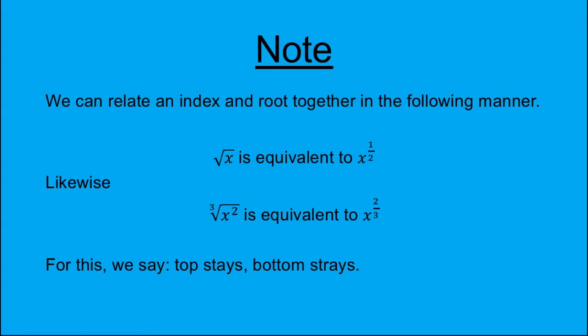The square root of x is equivalent to x to the power of one half. Likewise, the cube root of x squared is equivalent to x to the power of two thirds. For this, we say the top number stays, the bottom number strays.